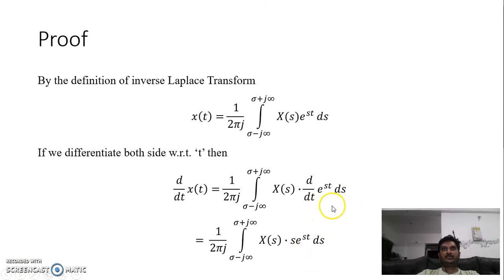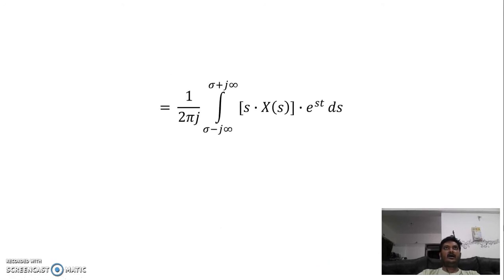What is going to happen is that the integration of this will be s times e^(st). It will be like this. And if we simplify further, we just rearrange that as we have taken over here.